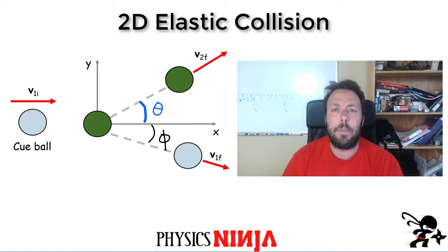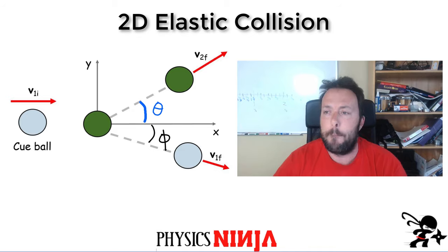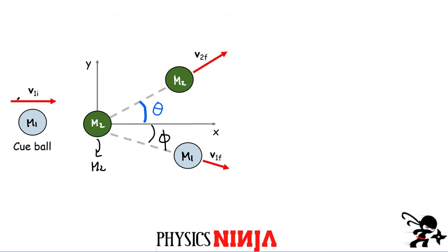Here's the setup: the cue ball is moving at some initial velocity, with mass m1. It's going to strike the green ball, which has mass m2 and is initially stationary — no velocity. Then we have them going off at an angle. The angle theta is the angle relative to the x-axis for the green ball, and the angle phi is the angle for the light blue ball.